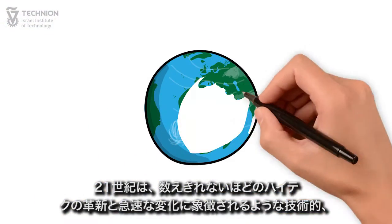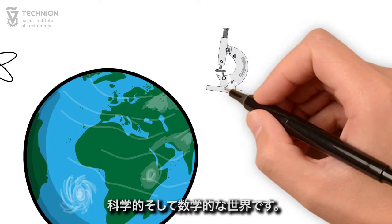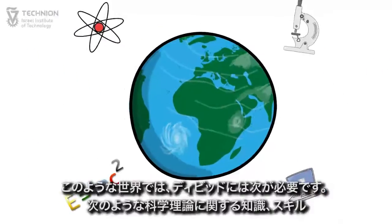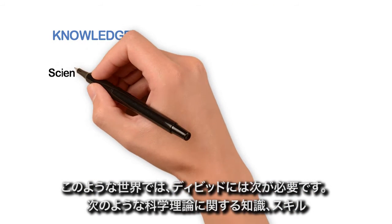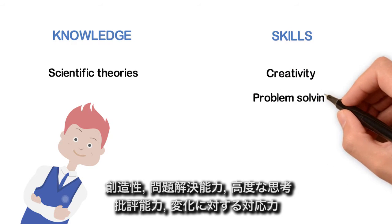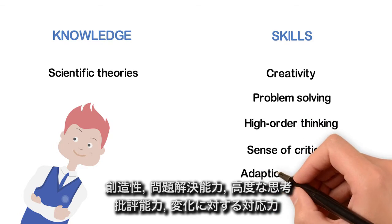The world of the 21st century is technological, scientific, and mathematical, marked by innumerable high-tech innovations and fast changes. In addition to knowledge and understanding of scientific laws, David will also need to exercise skills like creativity, problem-solving, high-order thinking, a sense of criticism, and adaption to changes.